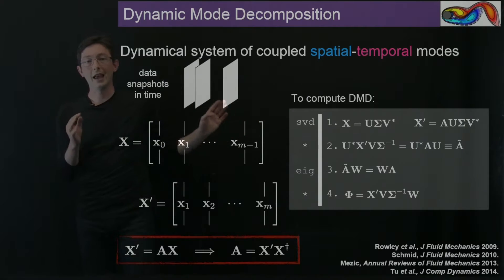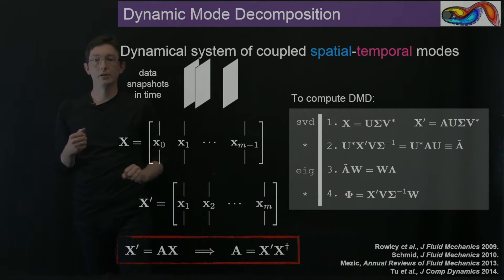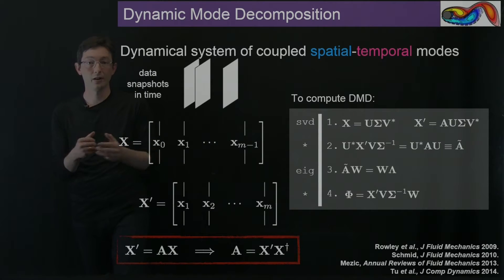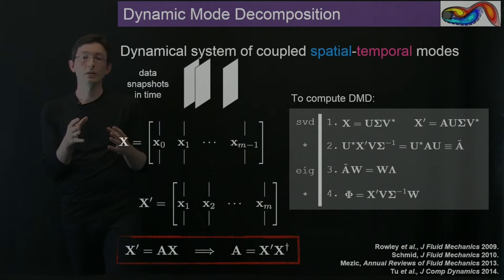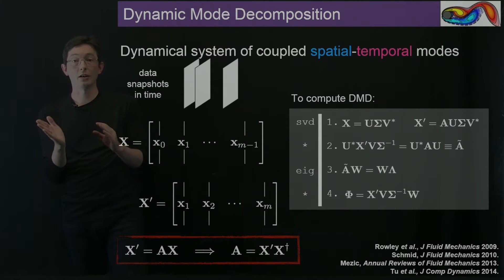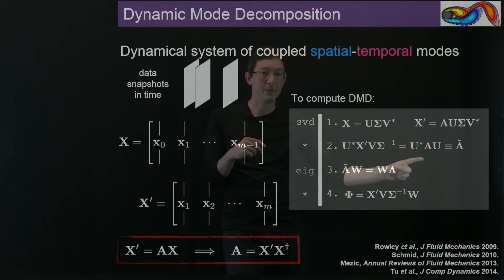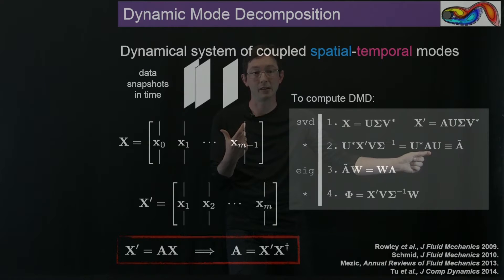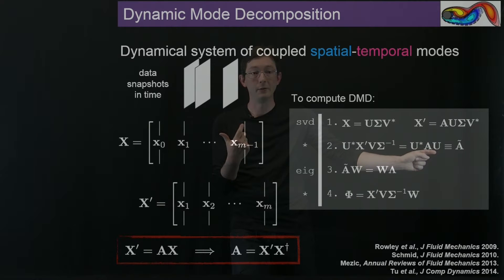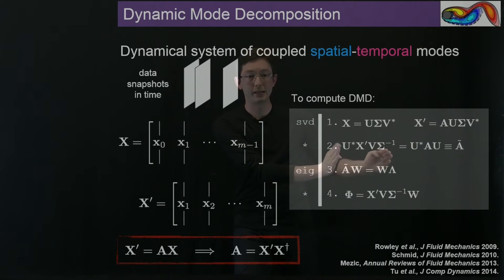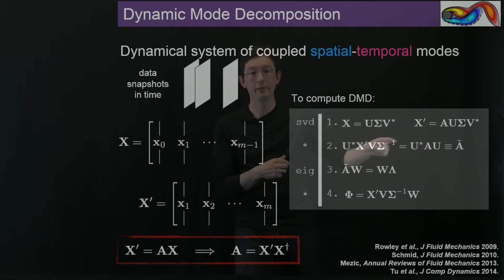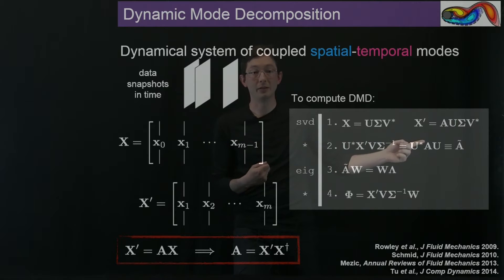Instead of ever computing the large least-squares best-fit operator A, I'm going to compute A projected onto my POD modes in U. I take my A matrix — never actually computing it — left-multiply it by U complex conjugate transpose and right-multiply by U. What I get is this small expression for A-tilde, which tells me the low-dimensional structure in the big matrix A. If the state dimension is N (say a million) and I only need 10 or 20 POD modes, then A-tilde is only a 10-by-10 or 20-by-20 matrix.